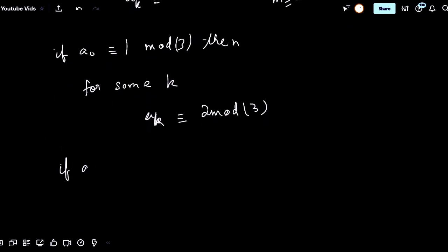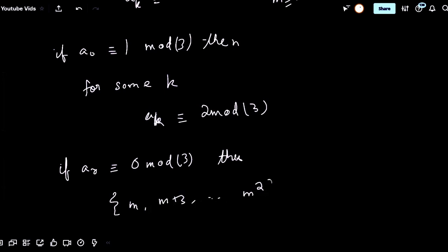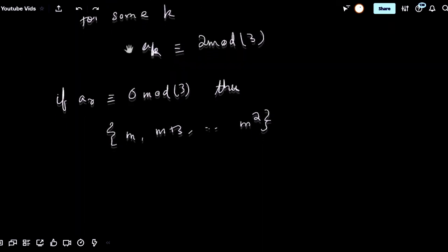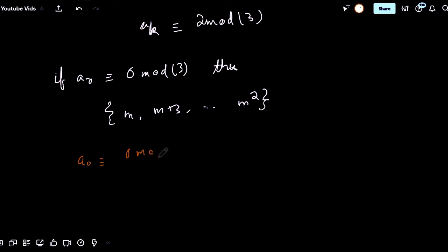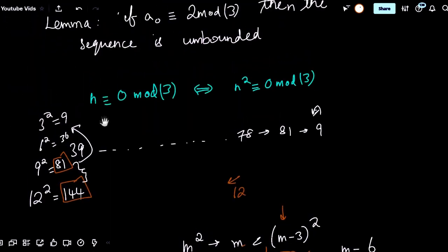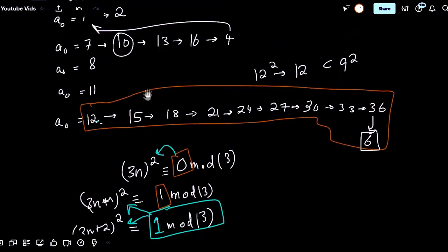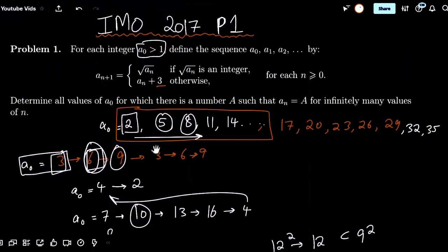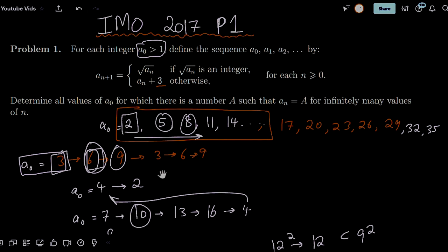We've proven that a0 ≡ 0 mod 3 is necessary and sufficient for the sequence to eventually become periodic. That's the problem solved. Observation led us through it — trying cases, noticing patterns, and proving lemmas to explain those observations. This is a universal approach in mathematics, not just in Olympiad problems.